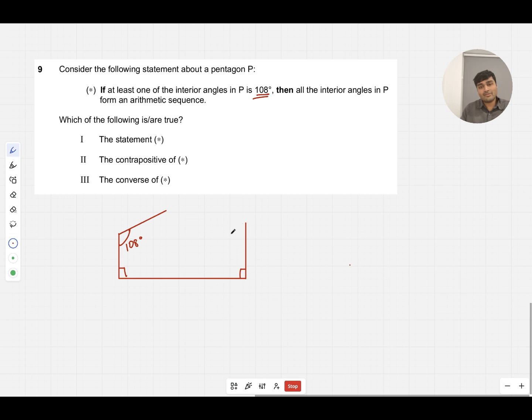Because these two are the same angle, if they were an arithmetic sequence they'd all have to be 90 degrees, since the difference between these two angles is zero. I can just join these up. Clearly this is not going to form an arithmetic sequence, so statement one and statement two are both false.